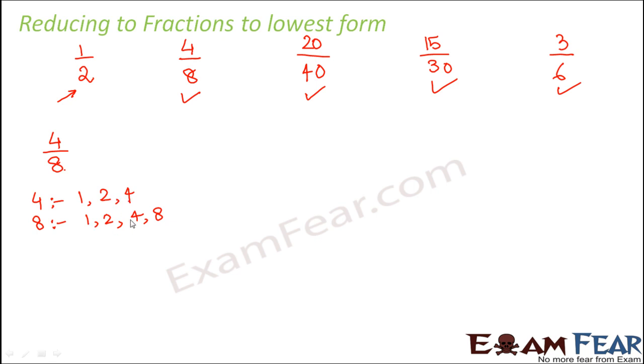So besides 1, if it has more common factors, only then that particular fraction can be reduced to a lowest form. So in this case we have 2 as a common factor, we also have 4 as a common factor. So we find out the HCF, that is highest common factor. Which is the highest common factor? 4. Right? So the highest common factor is 4.